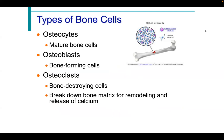The three bone cells are osteocyte, osteoblast, and osteoclast. Remember: osteoclast sounds like 'clash' — clashing means destruction or breakdown. The osteoclasts are the bone-resorbing cells. The osteoblasts are the bone-forming cells.